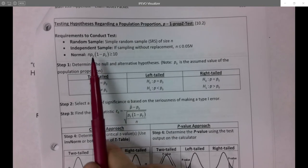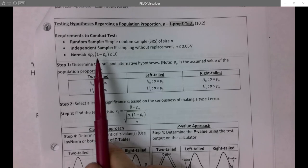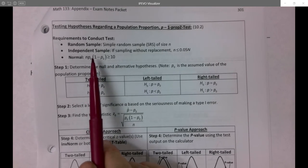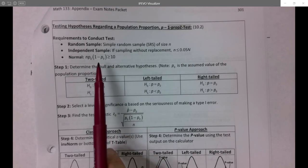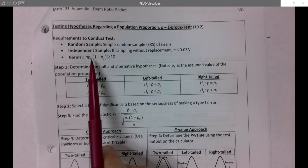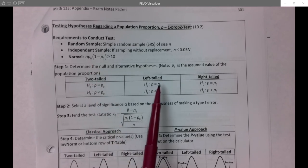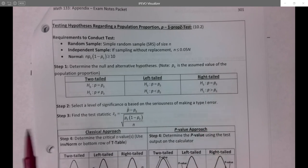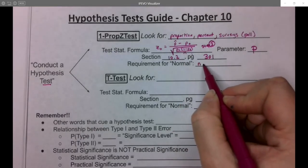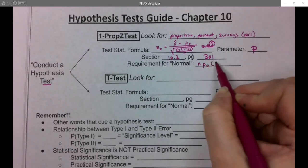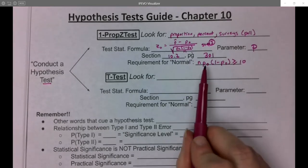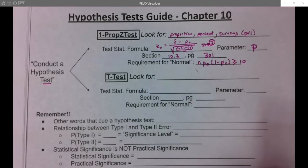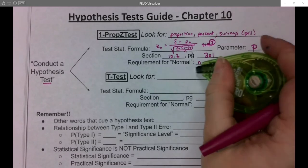One other thing to note is the requirement for normal is actually a little bit different. For a single proportion z-test, we will use p₀, the null hypothesis assumed value of the population proportion. So your requirement for normal is n times p₀ times (1-p₀) is greater than or equal to 10. And that's not p̂, that's p₀, the null hypothesis value.